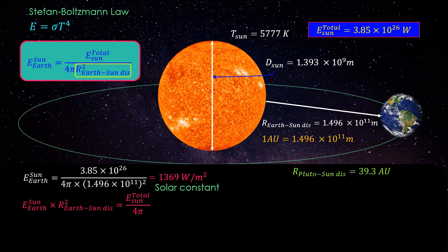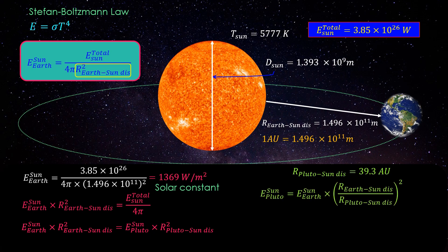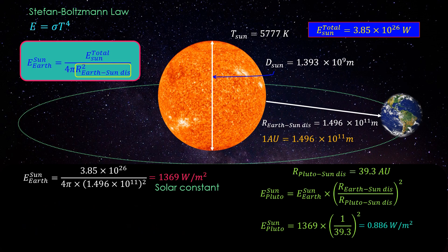we can write the radiant energy from the sun reaching Earth multiplied by Earth-sun distance squared equal to the radiant energy from sun reaching Pluto multiplied by Pluto-sun distance squared. On rearranging and substituting the values we get 0.886 watt per meter square solar constant at Pluto.